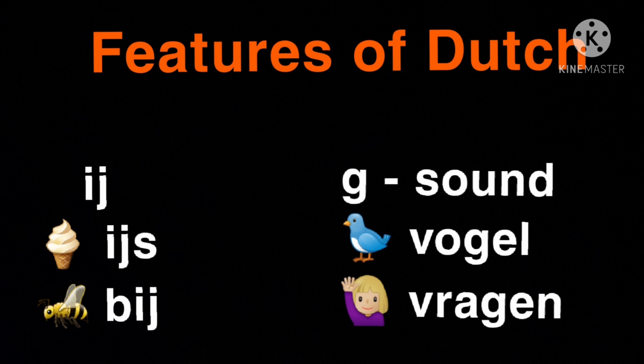Here are things I consider to be very Dutch — and I learn Dutch, so I know something about the language. The combination of I and J is very Dutch. For example, in IJs, or in bij. The G sound is also very special, for example in bird, which is vogel, and in ask, which is vragen.